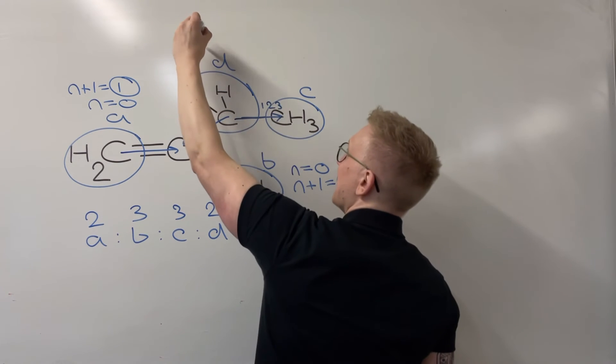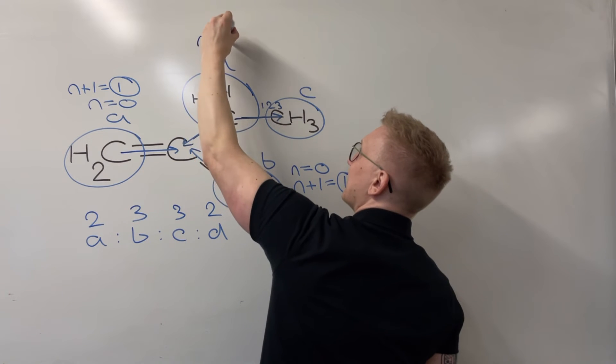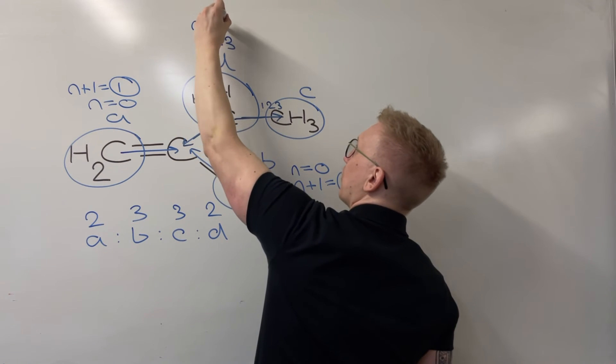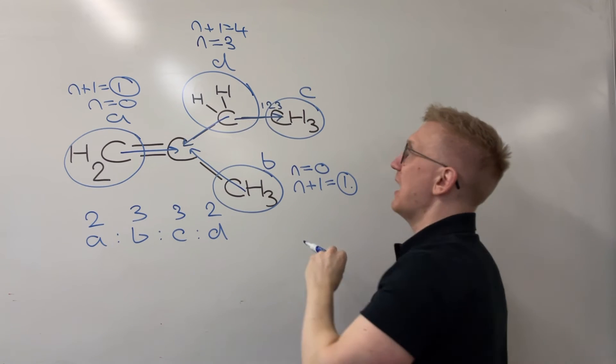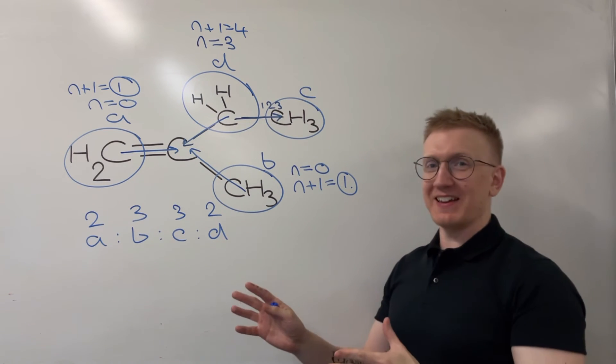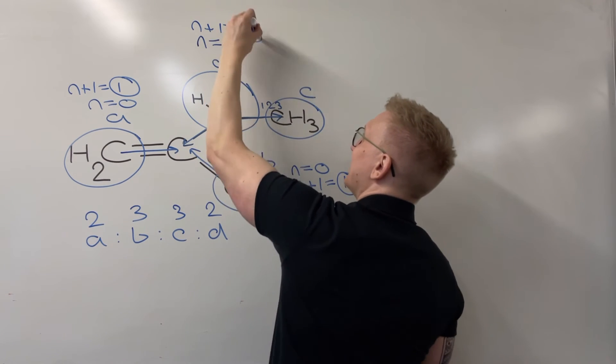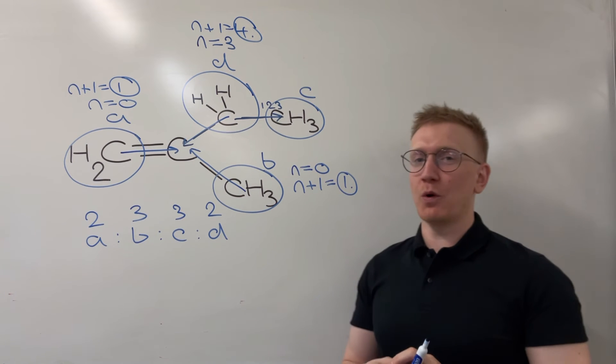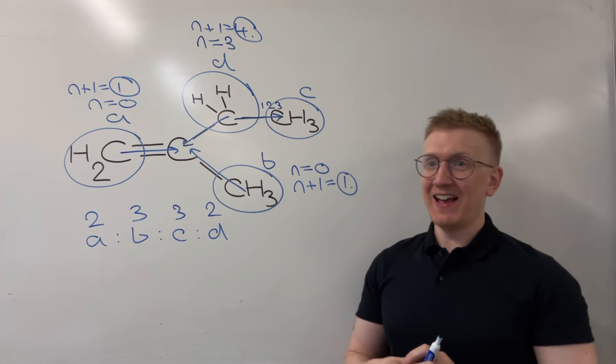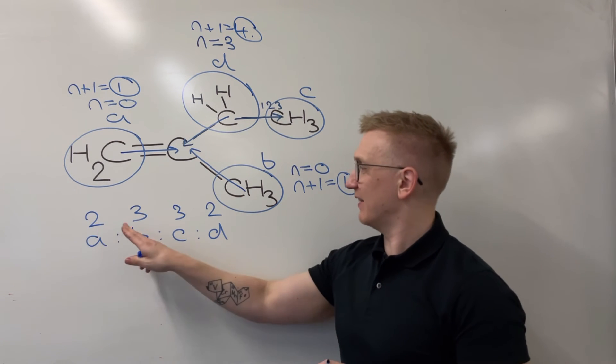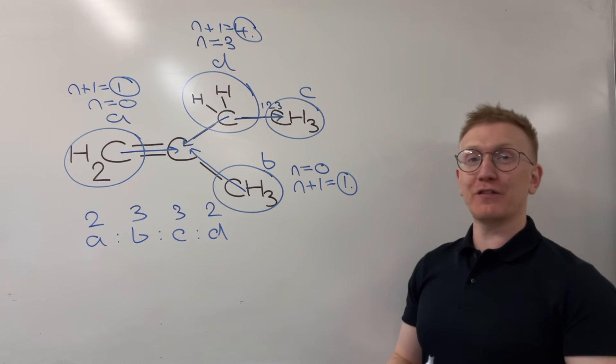Now for environment D, that means that N is going to equal three. So N plus one is going to be four. And so what that means, finally, I've got a splitting pattern. D is going to be split into what we call a quartet. And so, so far, I've got a singlet, a singlet, and then for D, I've got this quartet shape.